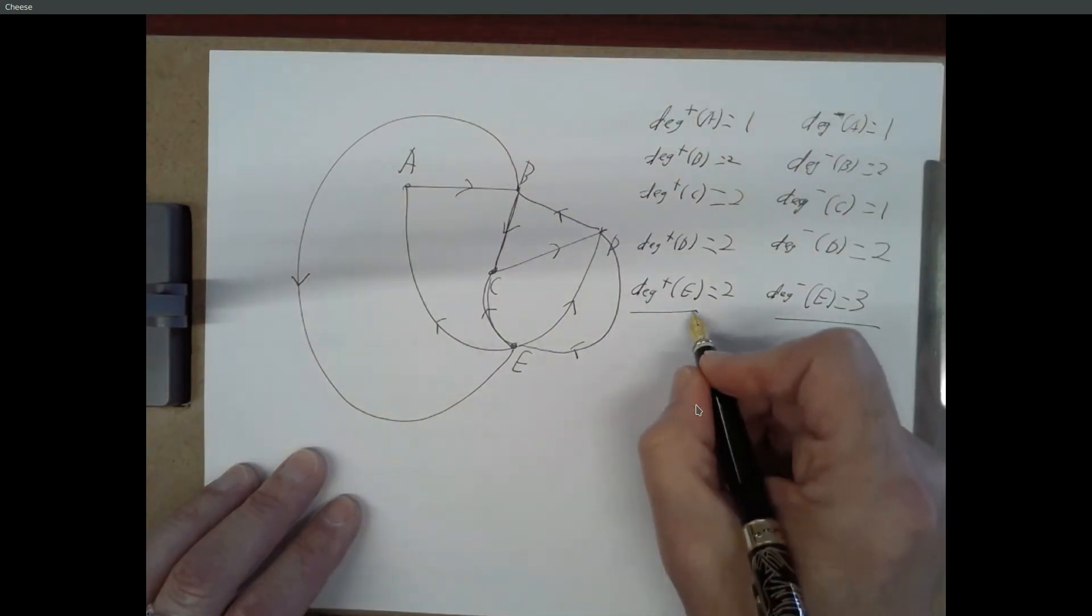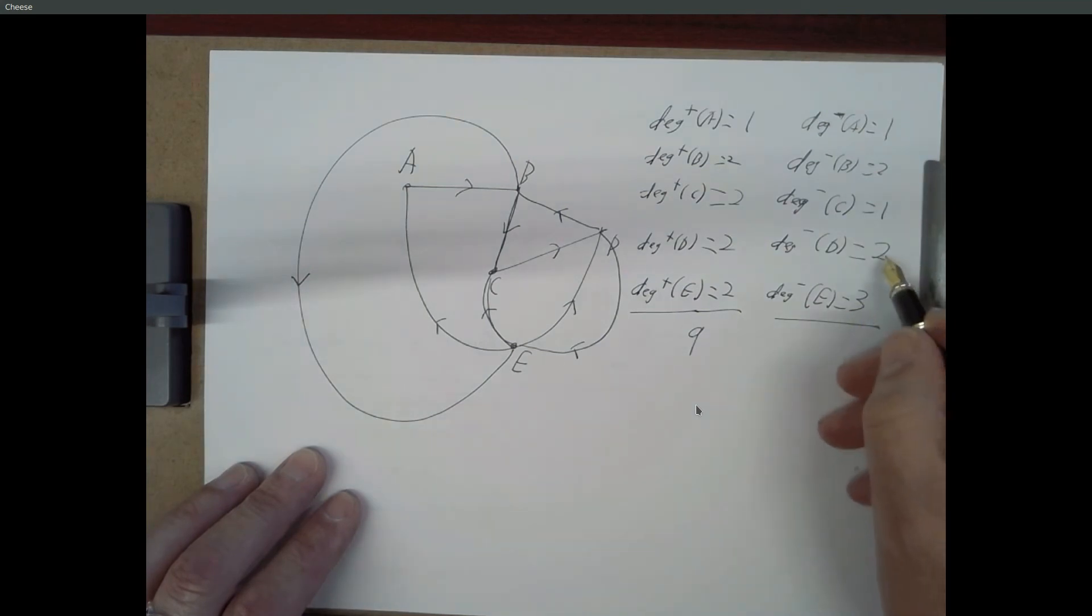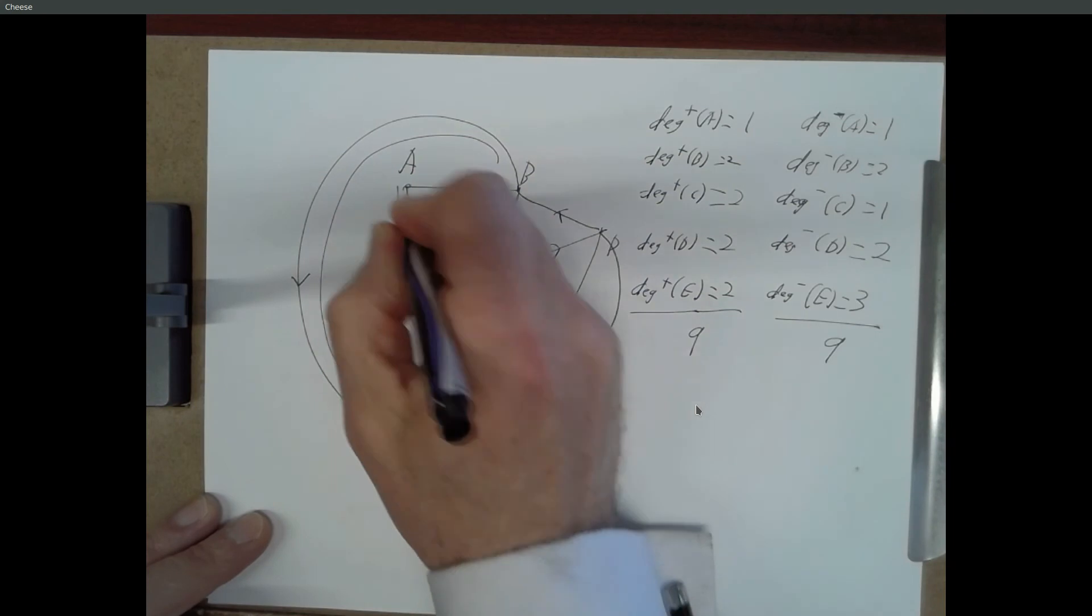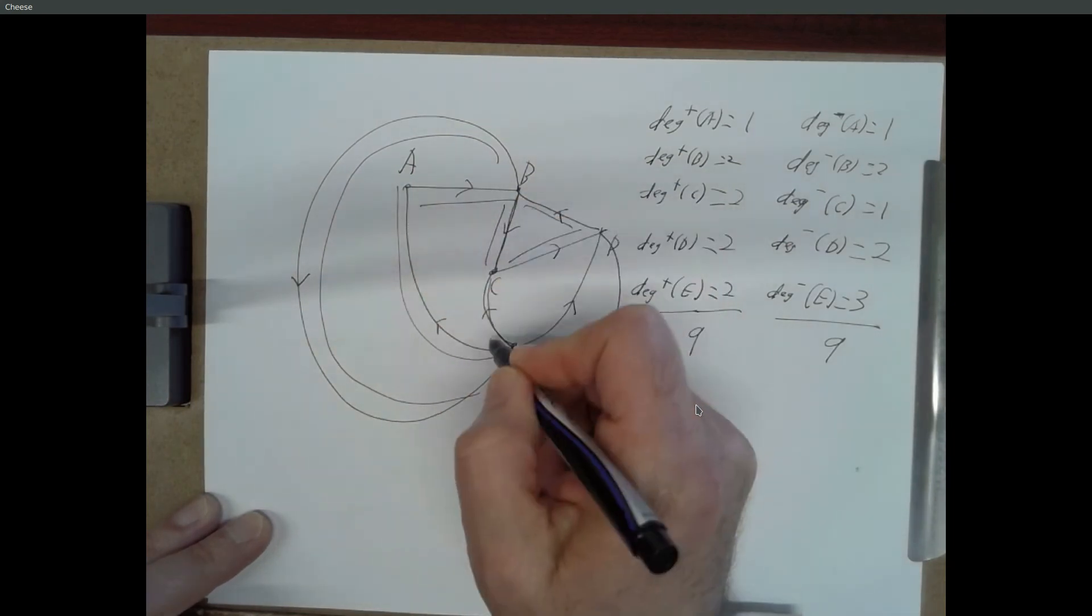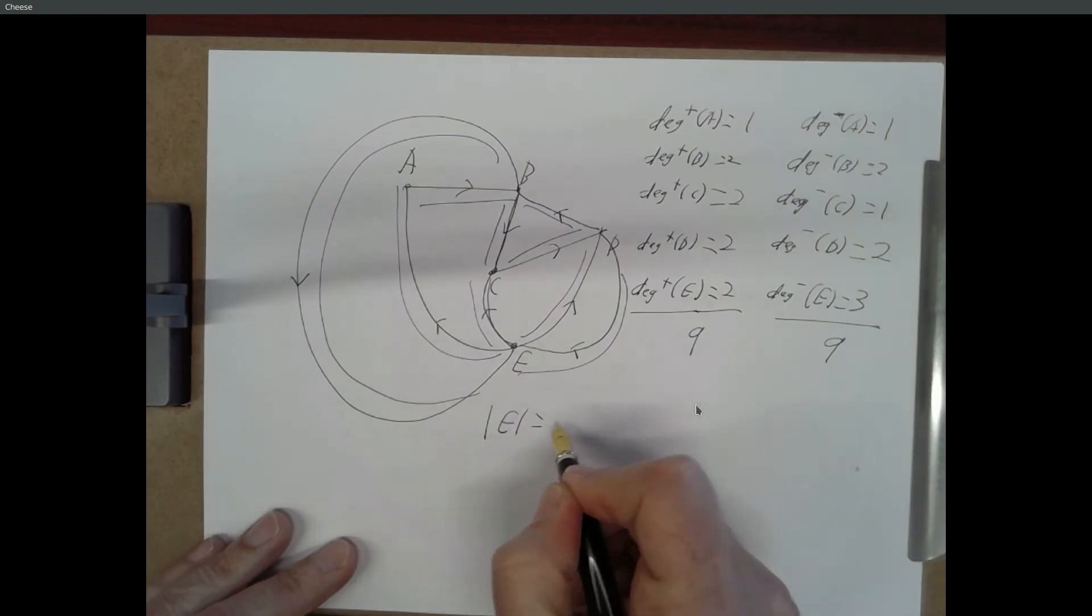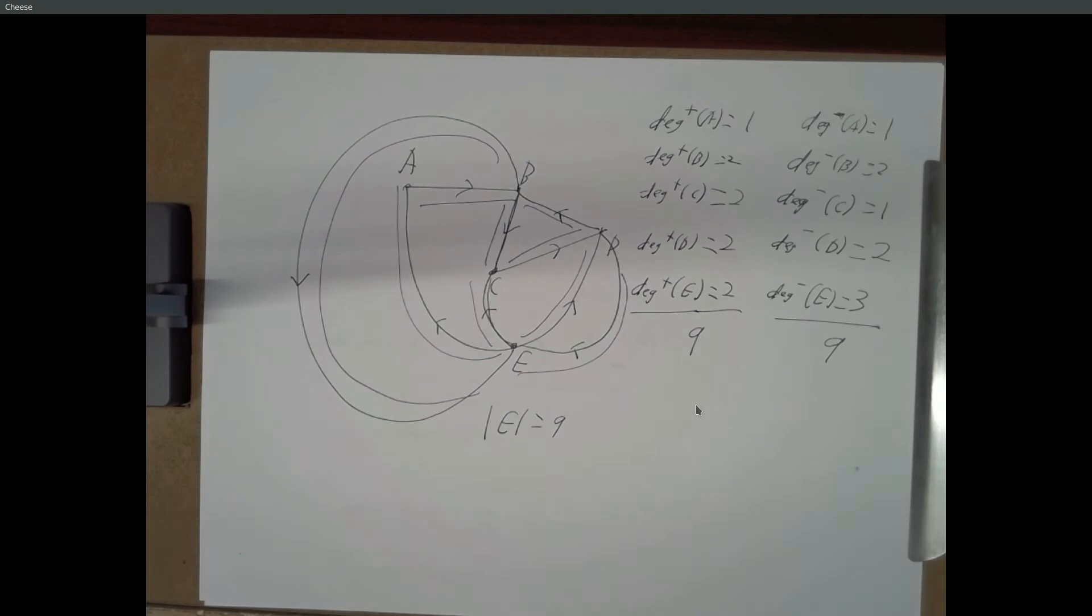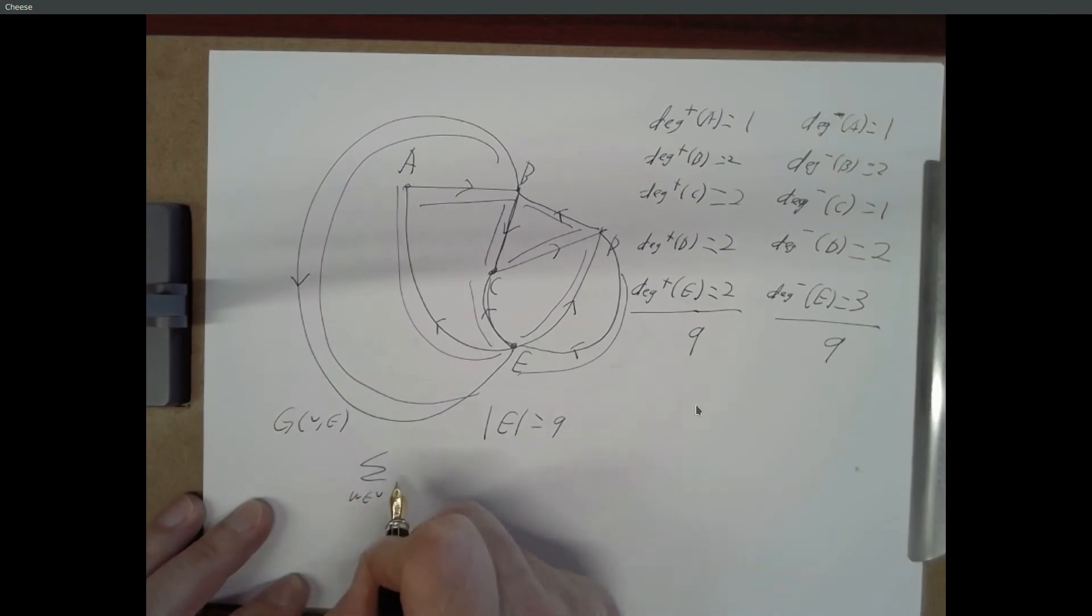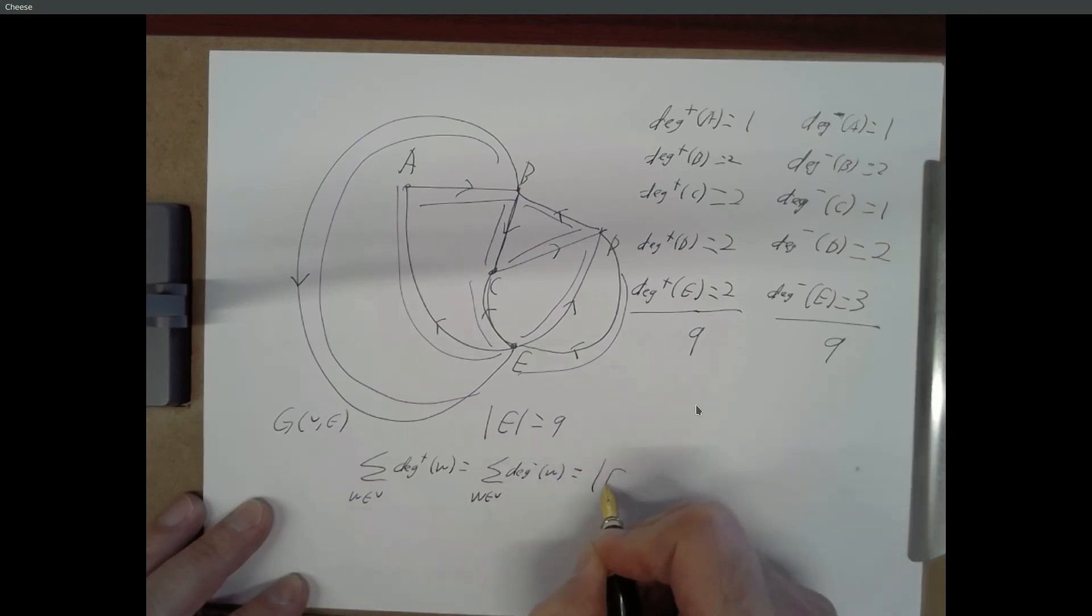So, let's add these up. So, 2, 4, 6, 8, 9, 3, 5, 6, 8, 9. Same number. Let me do my famous edge count again. 1, 2, 3, 4, 5, 6, 7, 8, 9. And this is a thing. So, the sum, so again, we have a graph, V, comma, E. The sum over all vertices of the in-degree is equal to the sum over all vertices of the out-degree, which is equal to the number of edges.